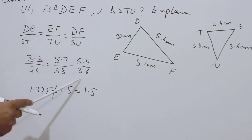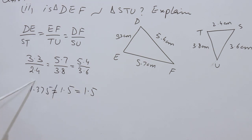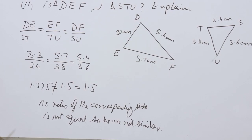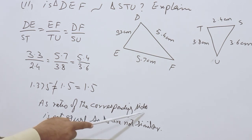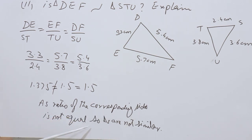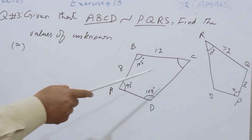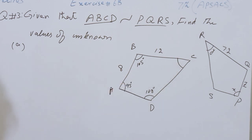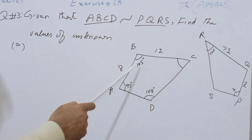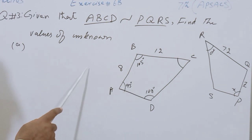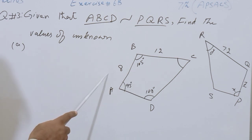So students, two ratios are equal but the third is not, meaning these two triangles are not similar. The statement is: ratio of the corresponding sides is not equal, so the triangles are not similar. We will find the value of angle C using the formula: sum of interior angles of any polygon equals n minus 2 multiplied by 2 right angles.